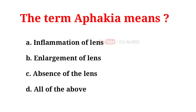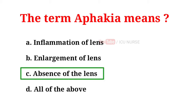The term afakia means: A. Inflammation of lens, B. Enlargement of lens, C. Absence of the lens, D. All of the above. And the correct answer is C. Absence of the lens.